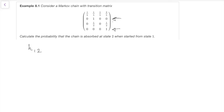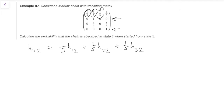We're going to condition on the first step. We might go from 1 to 1 with probability 1/5 — then by the Markov property it's like starting again from state 1, giving H(1,2). We might go from 1 to 2 with probability 1/5, giving H(2,2). With probability 1/5 we go to state 3, giving H(3,2). Or with probability 2/5 we go to state 4, giving H(4,2) by the Markov property.